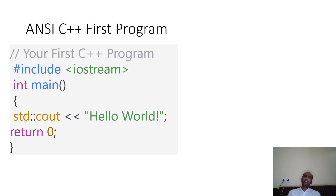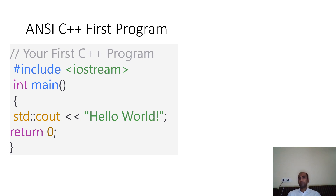If you use an online C++ compiler, the previous code using iostream.h may not work — that code works in Turbo C++. For online or ANSI C++ compilers (ANSI: American National Standard Institute), there are slight syntax changes. Instead of iostream.h, write iostream without the .h extension. Then instead of just writing cout, you write std::cout followed by the << symbol and then 'Hello World.' The rest remains the same.